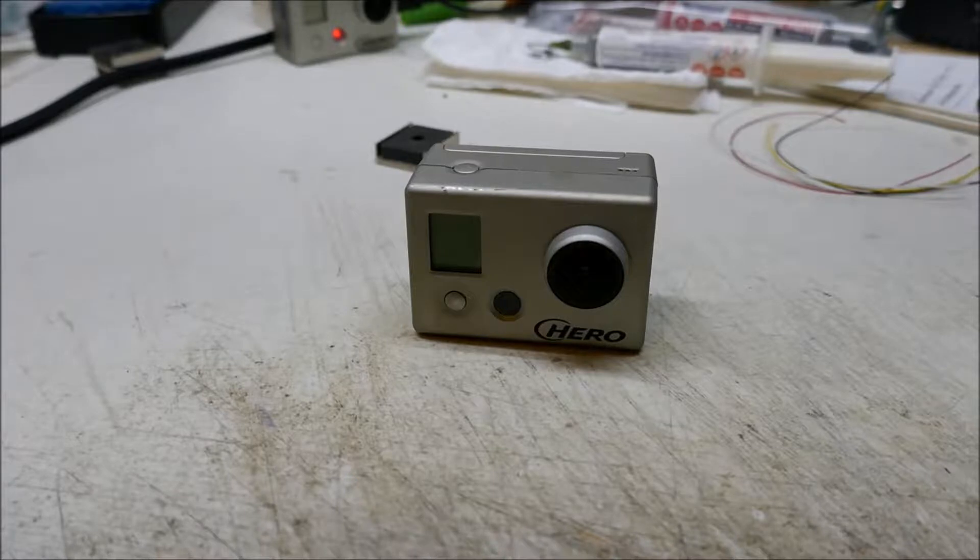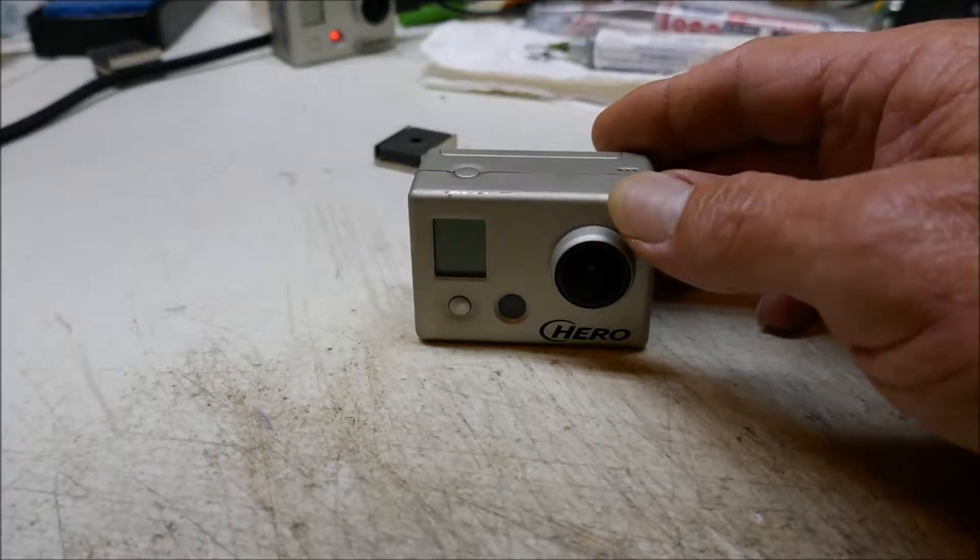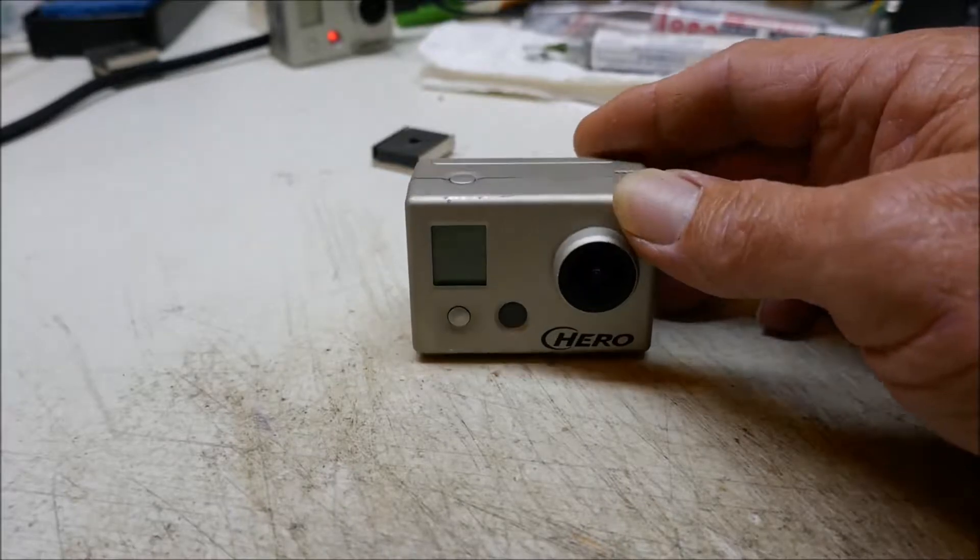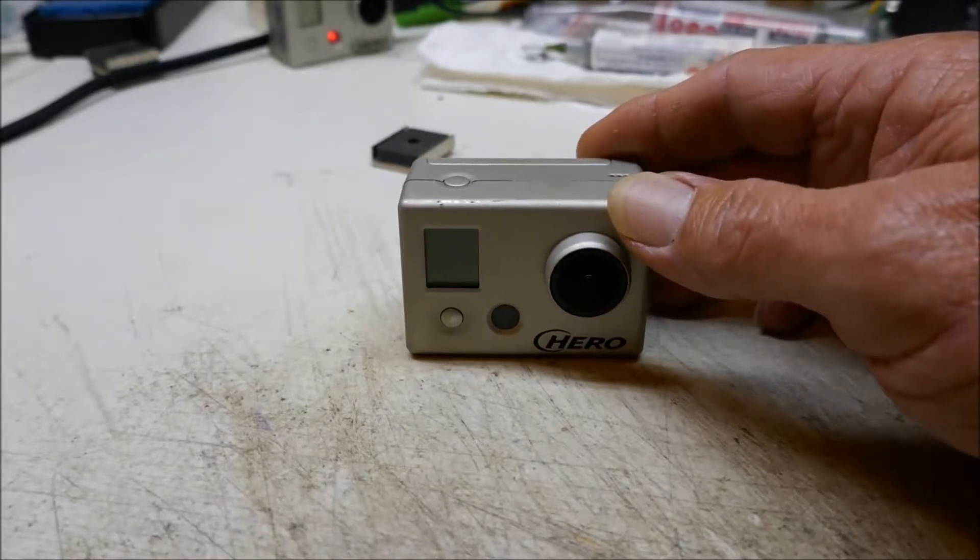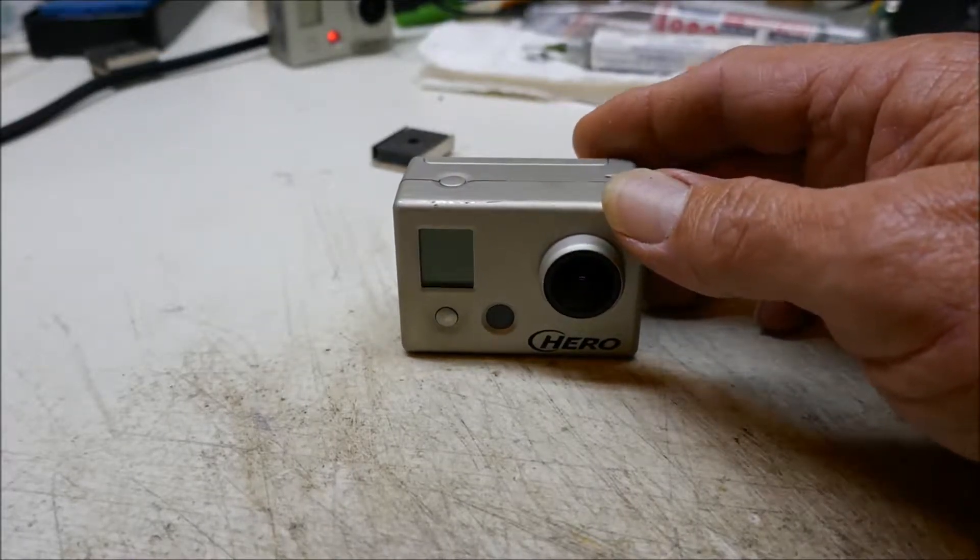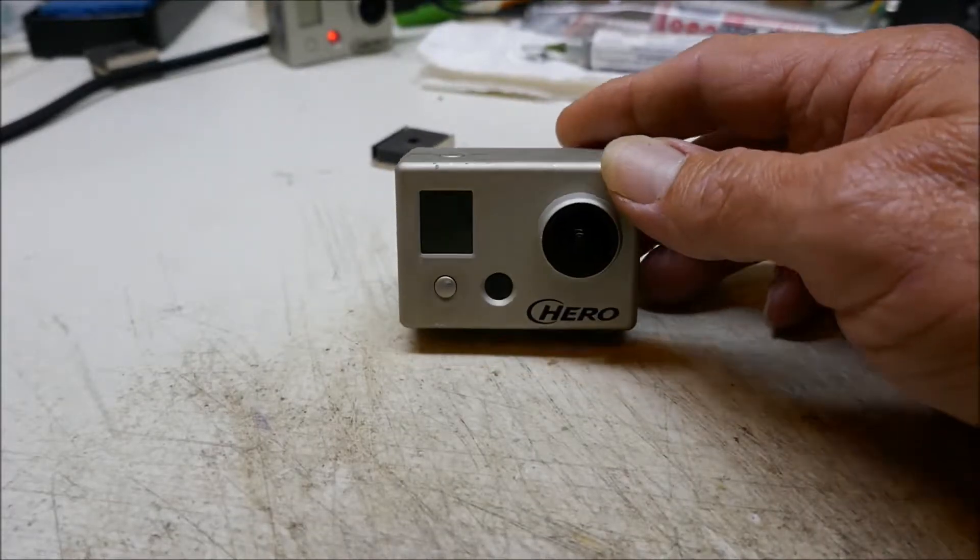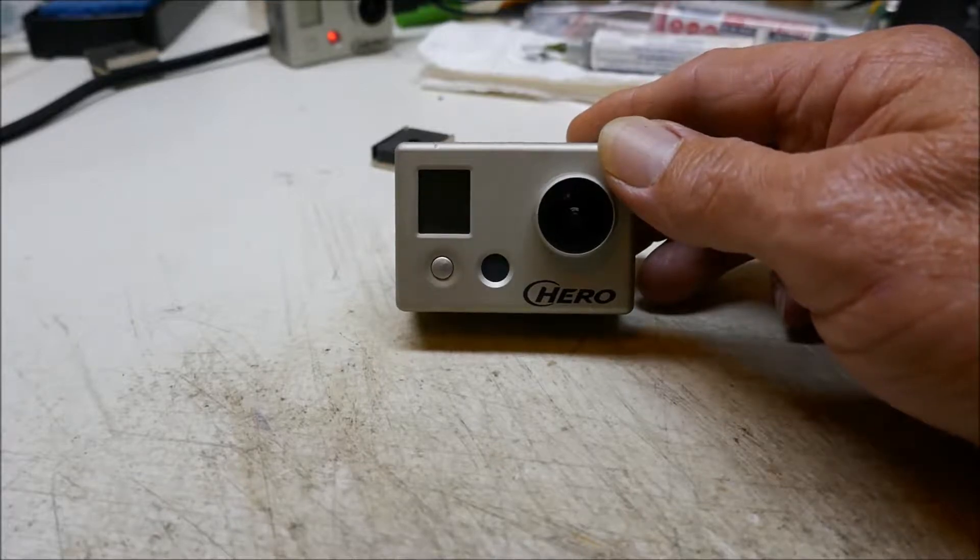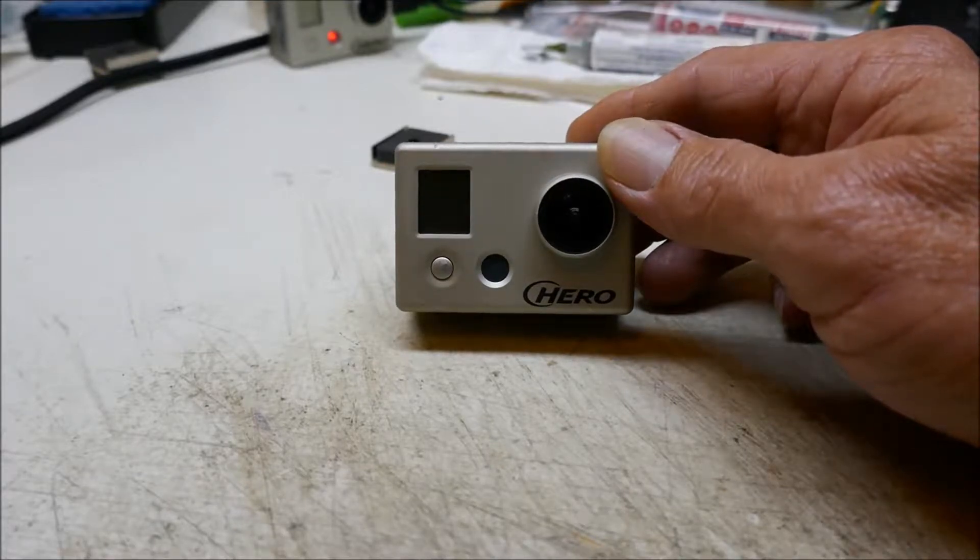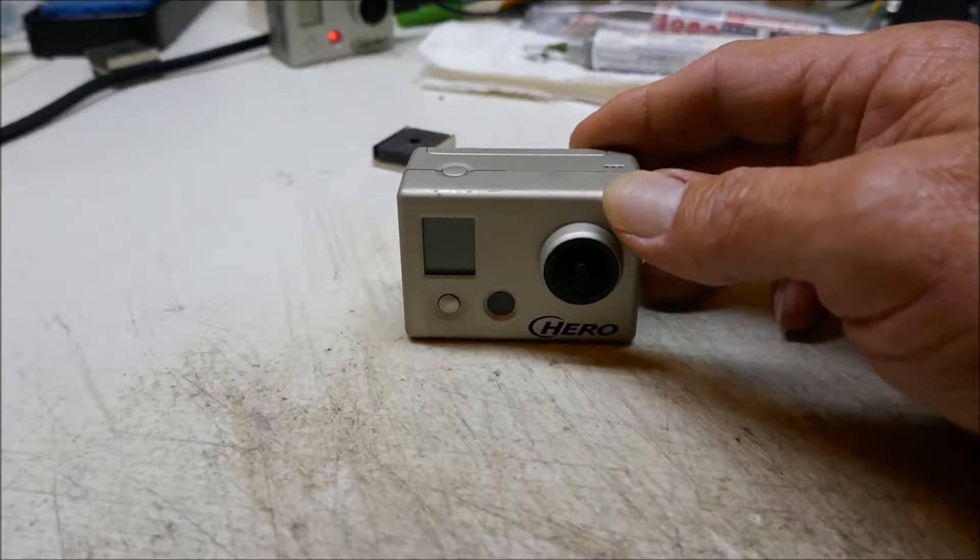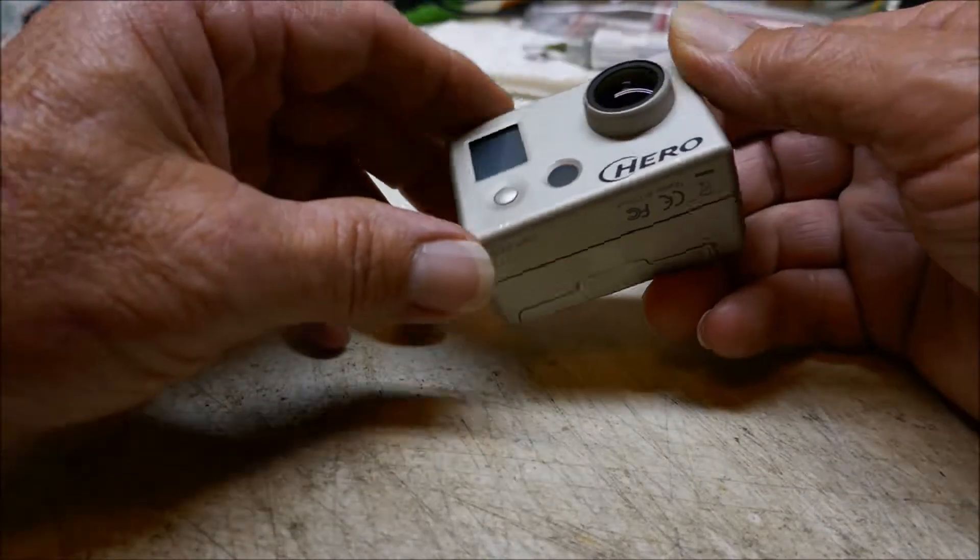All right, today we're going to be hacking a GoPro Hero HD. This is a GoPro Hero 1. I'm not sure, but I think the Hero 2 would be the same hack. We're going to be using this as a trail camera. This camera is capable of taking still photos, time-lapse photos, and HD video 1080p.